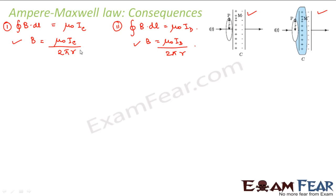The exact values of conduction current and displacement current depend on the specific scenario, but the total current must remain the same. Outside the capacitor you have only conduction current; inside you have only displacement current. Therefore, conduction current and displacement current must be equal to each other.